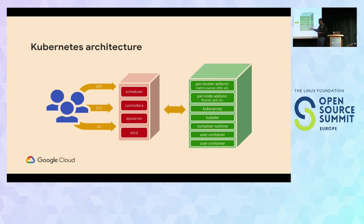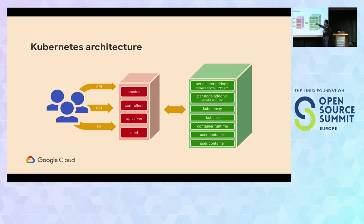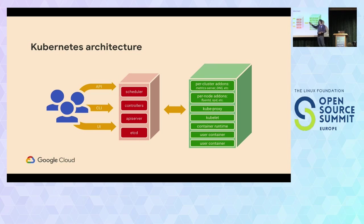On the worker node or data plane side, you have a bunch of components. The major ones are the kubelet, kube-proxy, and the container runtime. The kube-proxy does network programming — it makes sure the node is programmed so containers can talk to each other. It's not an actual proxy; it doesn't sit on the data path. The kubelet's job is to receive orders from the API server and report the status of the node back. Then the container runtime — whether that's Docker, containerd, rkt, or whatever — will run the container for you.